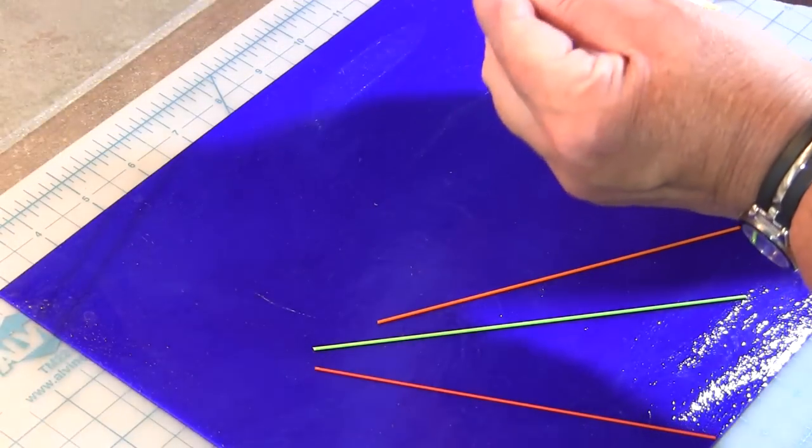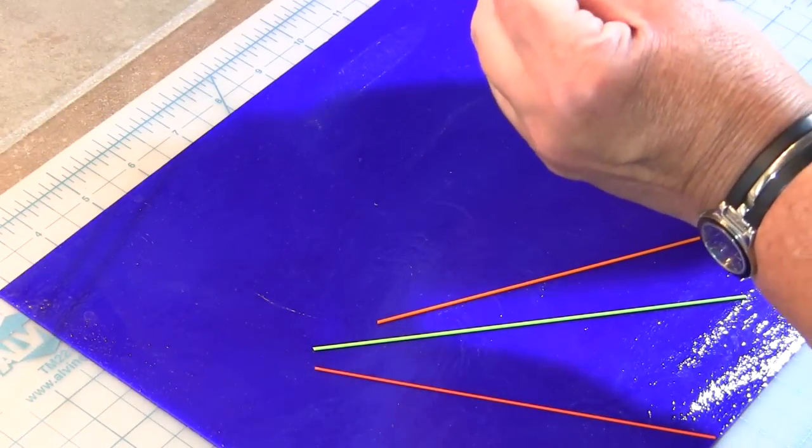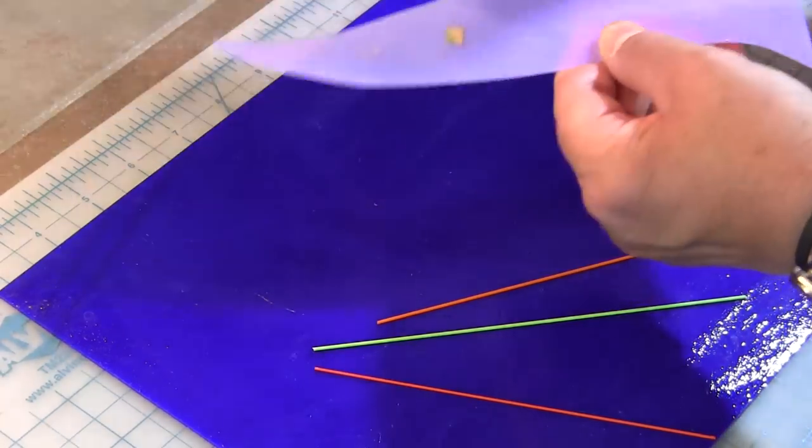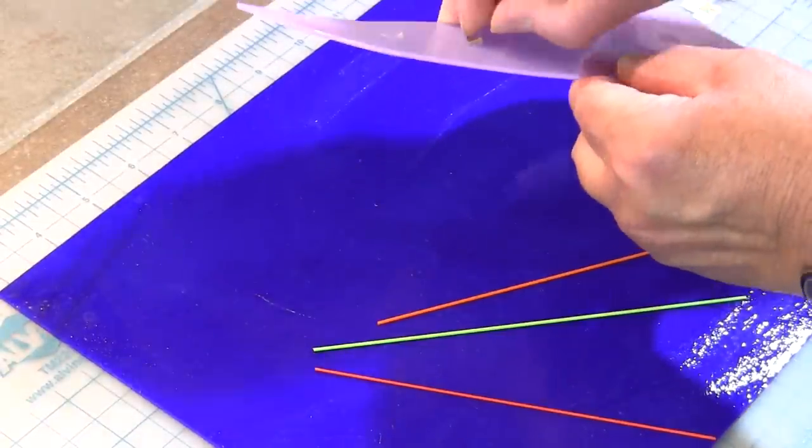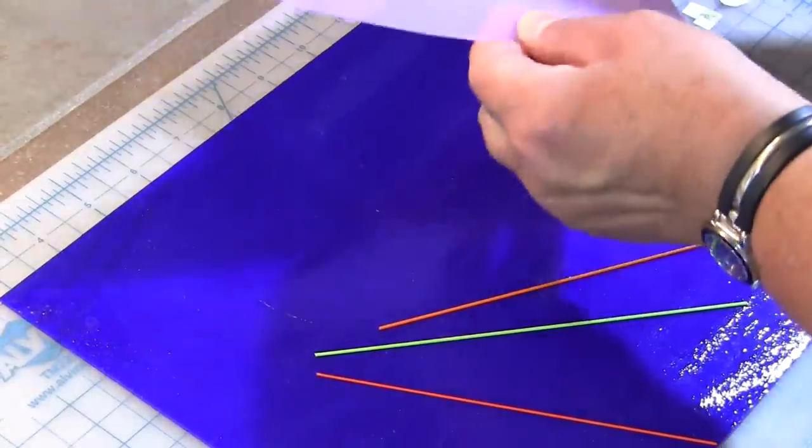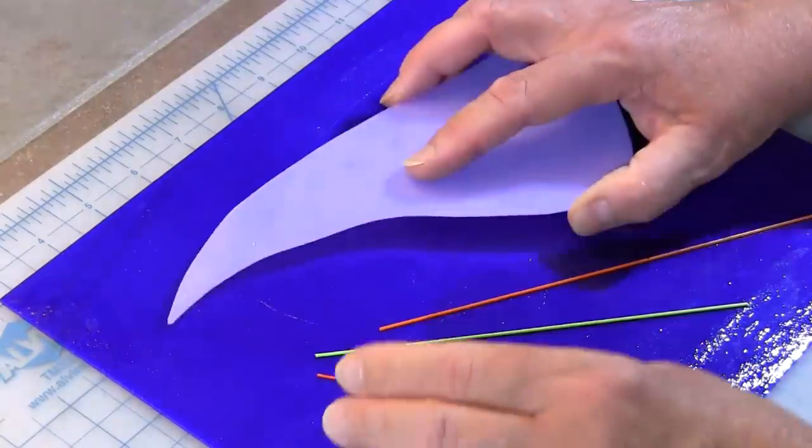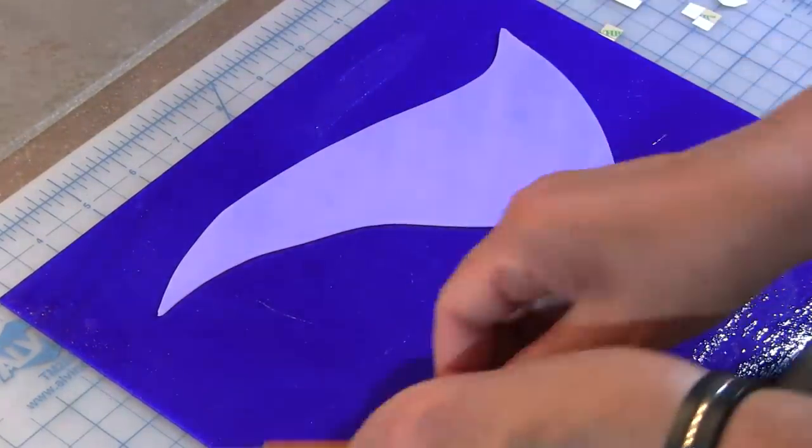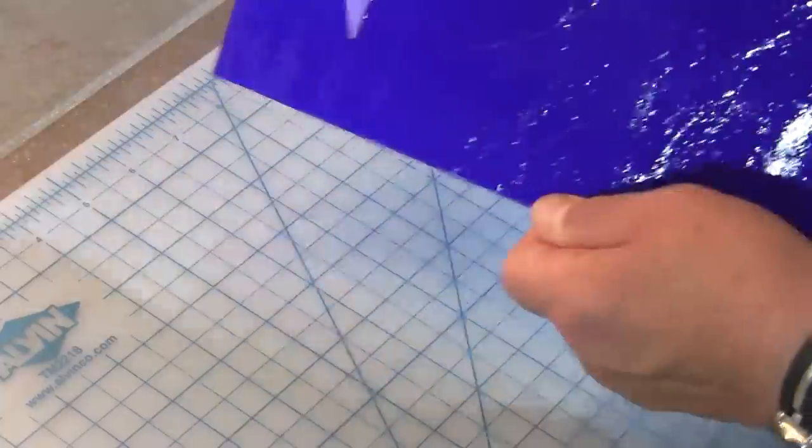And just before you're ready to put it down, you peel off the backing right there, and you place it and gently push it down, and your piece is now stuck.